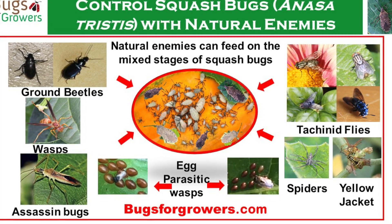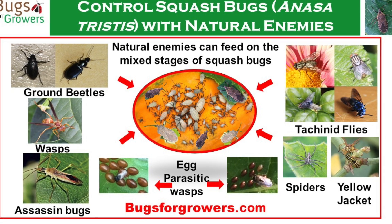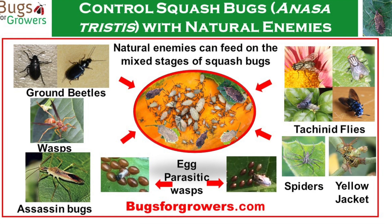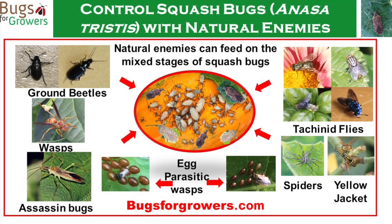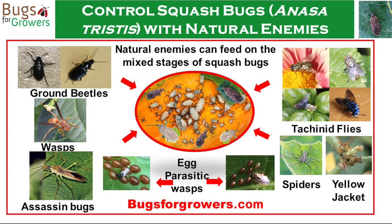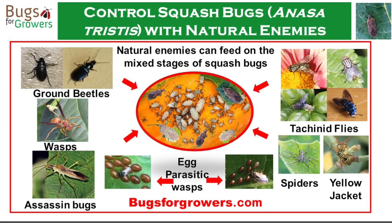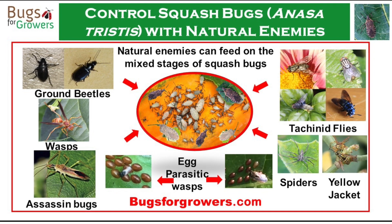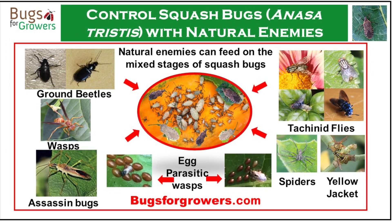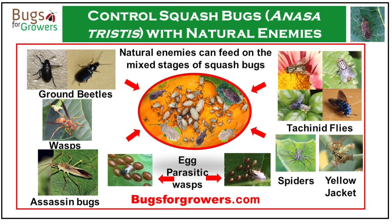Predators including spiders, ground beetles, assassin bugs and wasps directly consume squash bugs, whereas parasitoids like tachinid flies and egg parasitic wasps generally parasitize squash bugs and their eggs. Insect pathogens like bacteria, fungi, viruses or protozoa can cause diseases in squash bugs and reduce their populations.